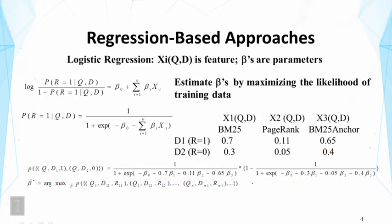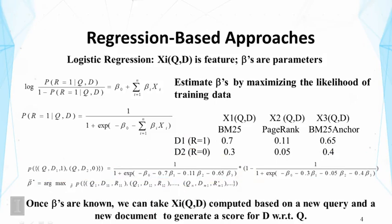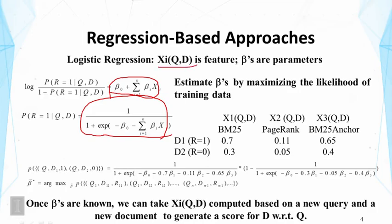Once we do the training, we will know the beta values, so the function will be well defined. Once beta values are known, both the model form and the feature weights are completely specified. For any new query and new document, we can simply compute the features for that pair and use this formula to generate the ranking score. This scoring function can be used to rank documents for a particular query. That's the basic idea of learning to rank.